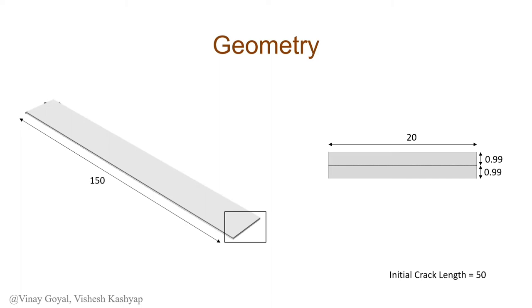This is a brief walkthrough of the geometry that we are going to be simulating. This is a normal cantilever of length 150 millimeters. The width of the cantilever is 20 millimeters. The height of the cantilever is 1.98 millimeters, which is evenly divided on both sides of the crack that has been introduced. The length of the crack along the length of the cantilever initially, also known as A naught, is 50 millimeters.